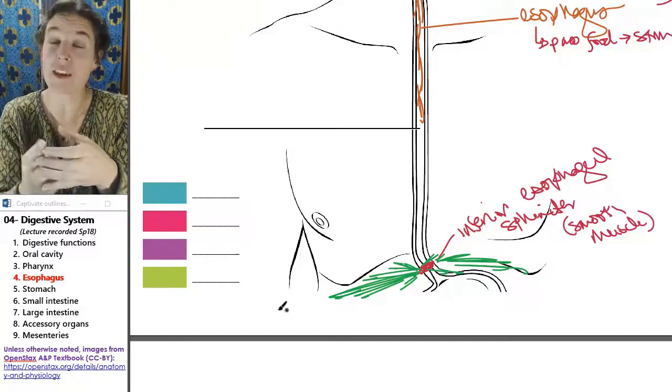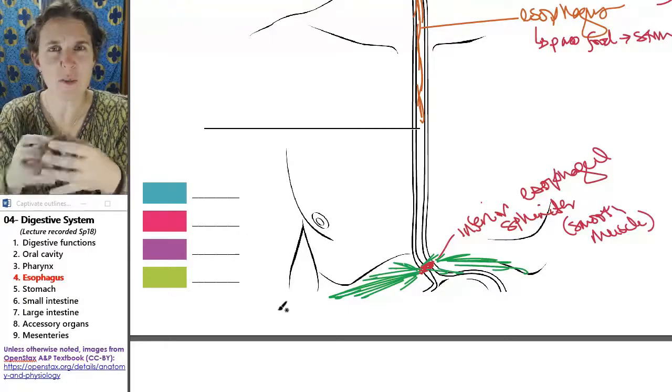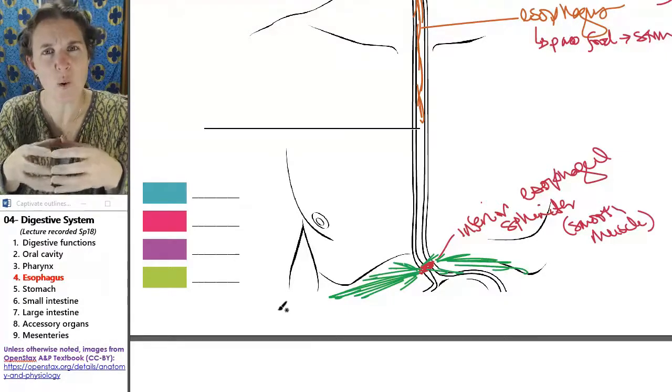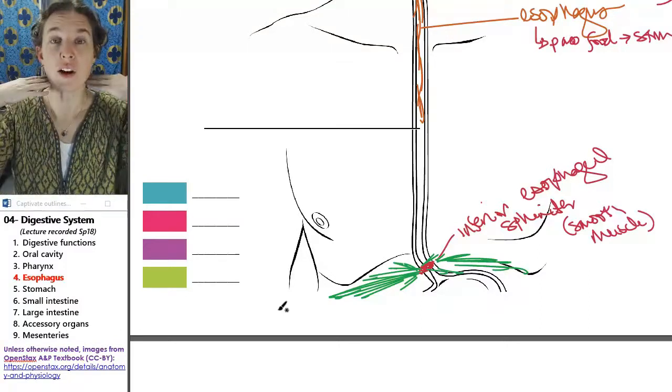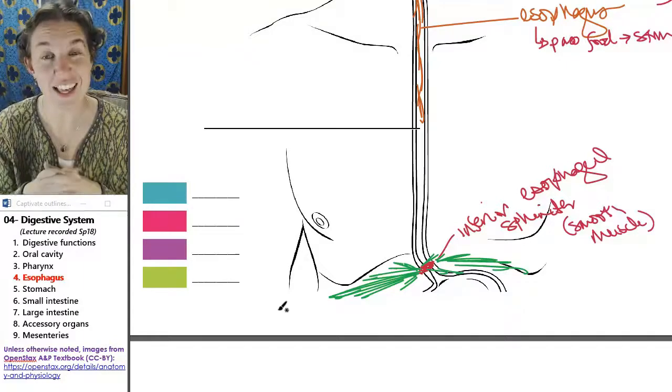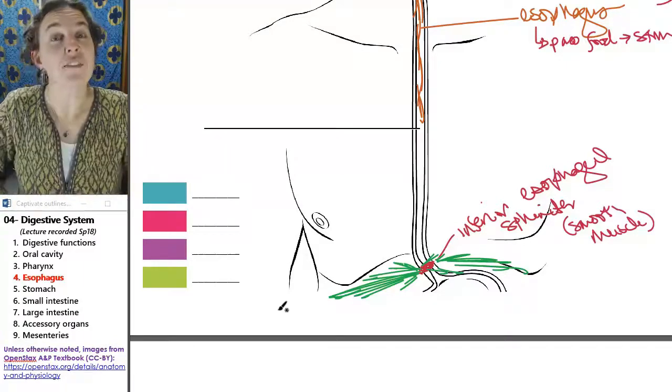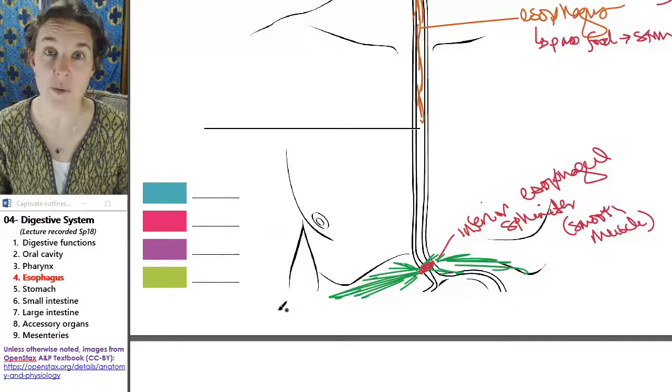And we're going to talk about this more when we do digestive histology in the next lecture. But the tube itself is surrounded with muscle. On the superior end of the esophagus, that muscle is skeletal muscle. On the inferior end of the structure, the muscle is smooth muscle.